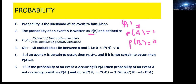Now, if the probability of an event occurring is denoted by P(A), then the probability of an event not occurring is denoted by P(A prime). If we add these two together the answer should be one — the probability of an event taking place plus the probability of an event not taking place equals one.